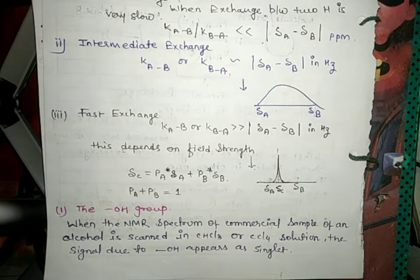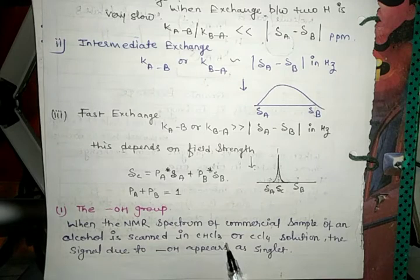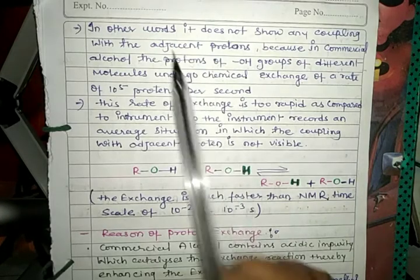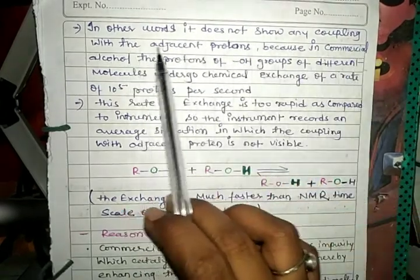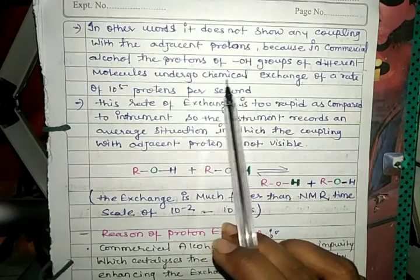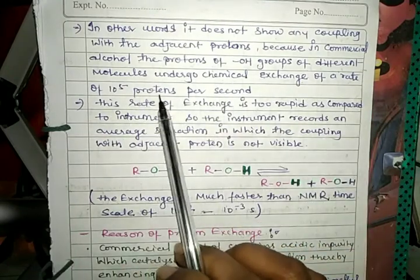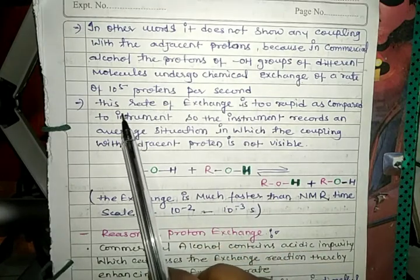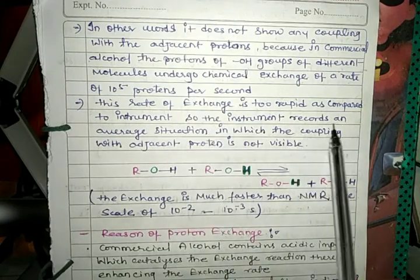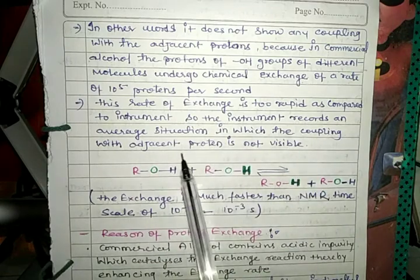Now we look at chemical exchange in the OH group. When the NMR spectrum of a commercial sample of an alcohol is scanned in CDCl3 or CCl4 solution, the signal due to OH appears as a singlet. In other words, it does not show any coupling with adjacent protons, because in commercial alcohol the proton of the OH group of different molecules undergoes chemical exchange at a rate of 10⁵ protons per second.